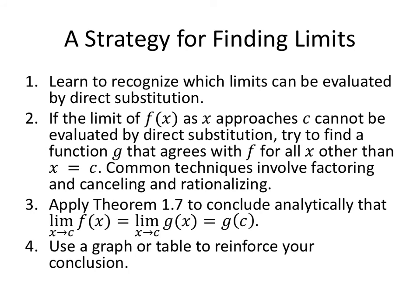Here we go. Our strategy for finding limits. First, learn to recognize which limits can be evaluated by direct substitution. If the limit of F of X as X approaches C cannot be evaluated by direct substitution, try to find a function G that agrees with F for all X other than X equals C. We're going to use factoring and canceling. We're going to rationalize. We're going to do whatever we need to do to find that new function G. Once we have that new function G, we use the theorem 1.7, and we could always use a graph or a table in order to reinforce our conclusion.